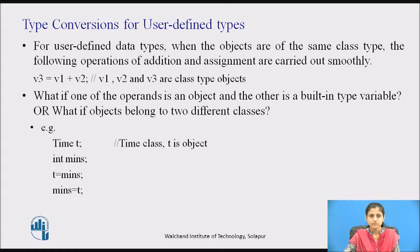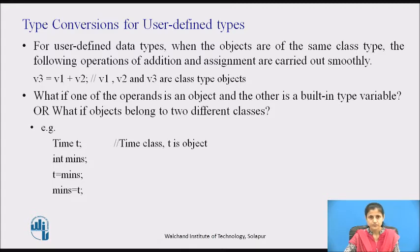But what if one of the operands is an object and the other is a built-in type variable? Or what if they belong to two different classes? The compiler does not support automatic conversions for user-defined data types. We must therefore design the conversion routines ourselves if such operations are required.